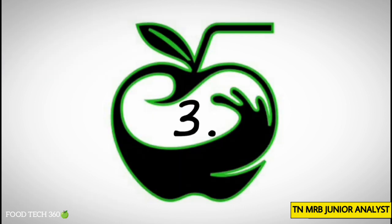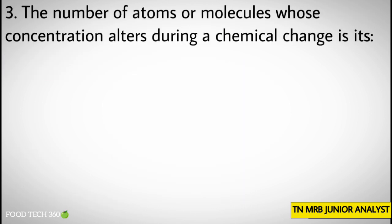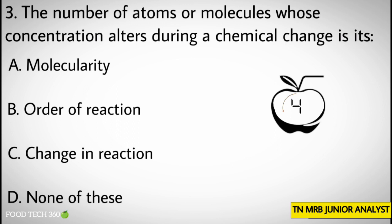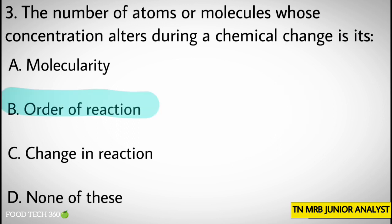Question number 3. The number of atoms or molecules whose concentration alters during a chemical change is its — options: A. Molecularity, B. Order of reaction, C. Change in reaction, D. None of these. Correct answer: B. Order of reaction.